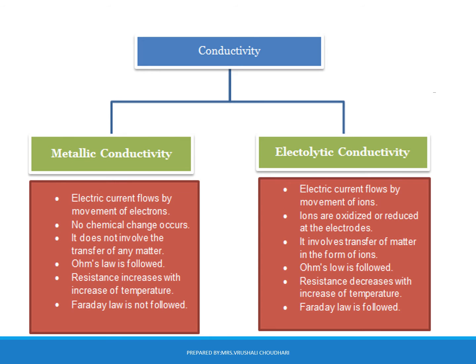We will study the difference between metallic conductivity and electrolytic conductivity. For metallic conductivity, electric current flows by movement of electrons, while in electrolytic conductivity, current flows by the movement of ions. In metallic conductors, free electrons are present. In electrolytic conductors, charged ions like cations and anions are present. In metallic conductors, no chemical change will occur, while in electrolytic conductors, ions are oxidized or reduced at the electrodes.